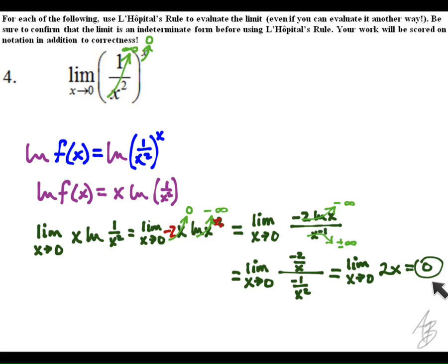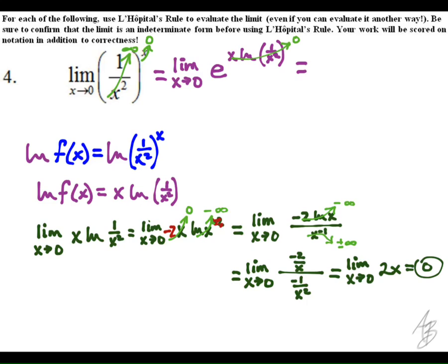This is not the limit of our original function — we have to use the laws of exponents and logarithms and the fact that they're inverses to evaluate that. The exponent is zero, so we get e to the zero, which is one. Points were given for the final answer, for rewriting the natural log of the function using the exponent rule for logarithms, and for using L'Hôpital's rule in this step.